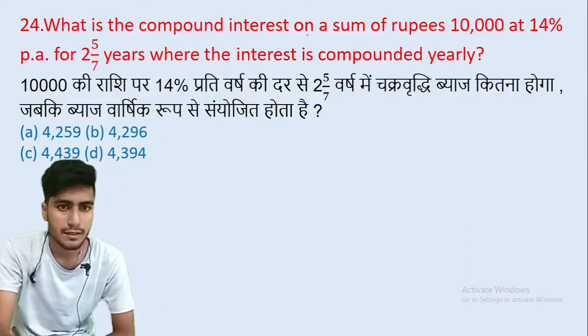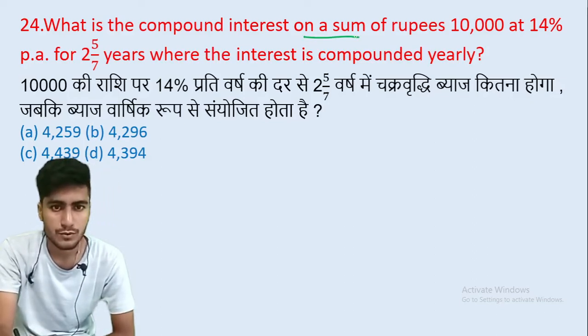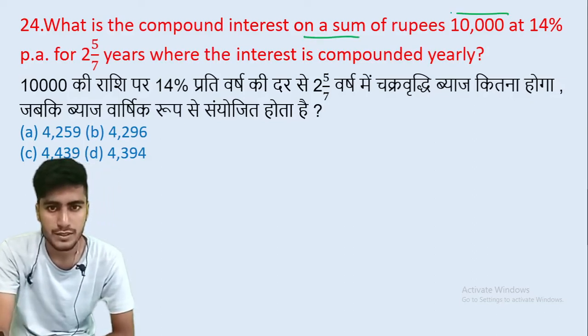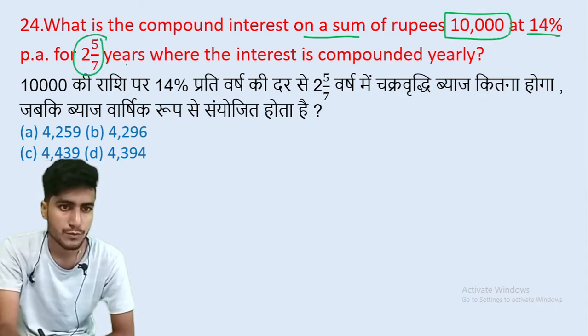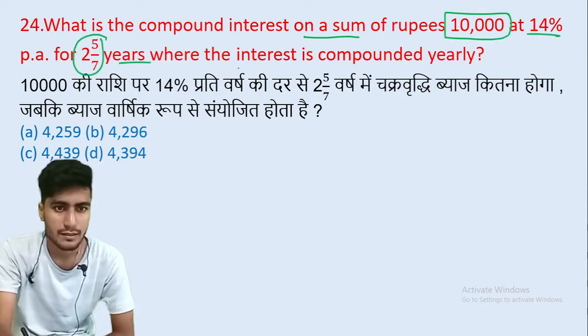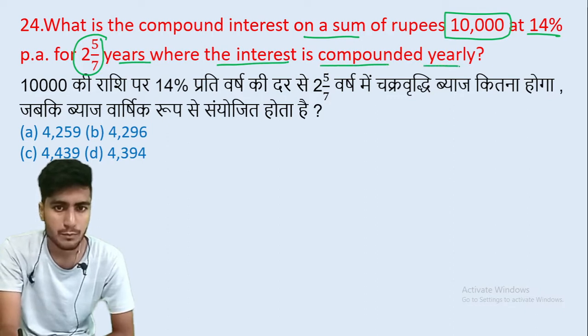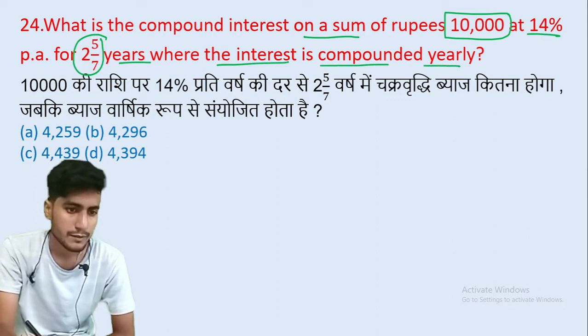What is the compound interest on a sum of Rs. 10,000 at 14% per annum for 2 and 5/7 years, where the interest is compounded annually?